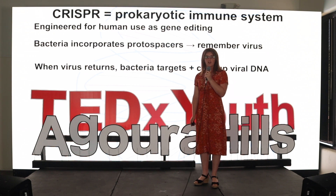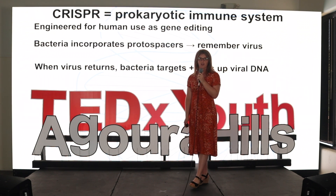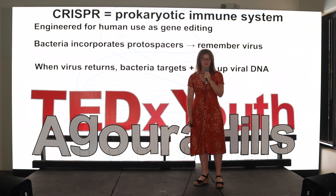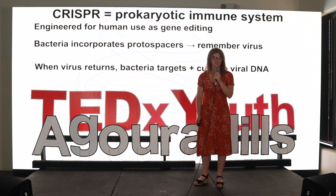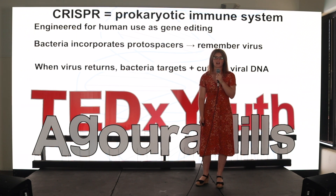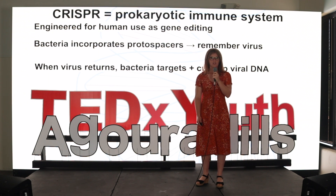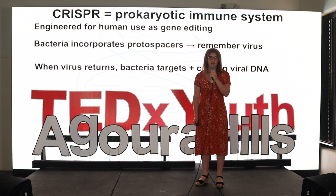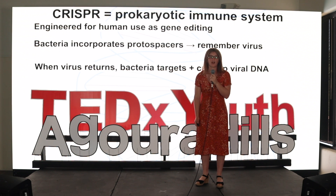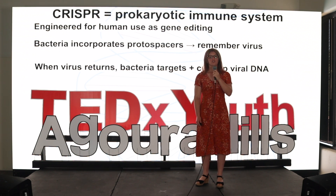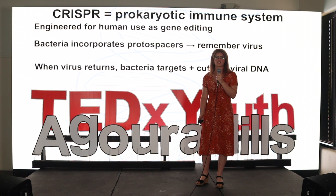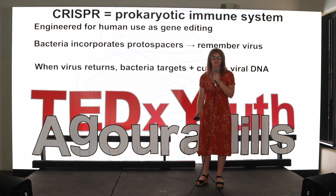CRISPR systems are more widely used than other technologies because they are more efficient in targeting varying gene sequences. This is because the protospacer at the beginning of the guide RNA is about 20 nucleotides long in CRISPR technologies, whereas it is 100 to 150 nucleotides long in other technologies, so CRISPR systems are more efficient in targeting varying gene sequences.